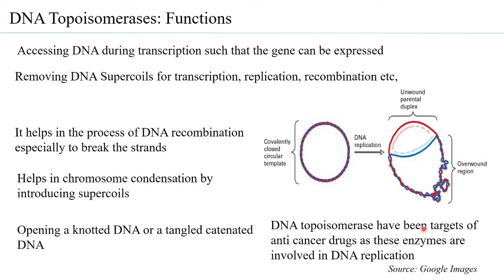DNA topoisomerases have become targets for several anti-cancer drugs because they are involved in DNA replication. In cancer, there is continuous division of cells; if cells keep dividing, replication must keep happening. By inhibiting topoisomerase — which is needed for relaxing the DNA to enable unwinding — replication can be stopped, and that is why topoisomerases are anti-cancer drug targets.